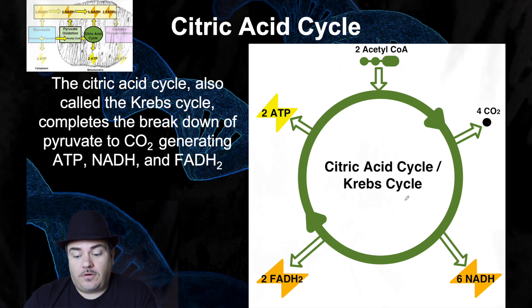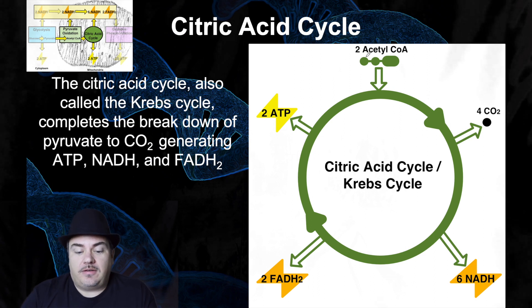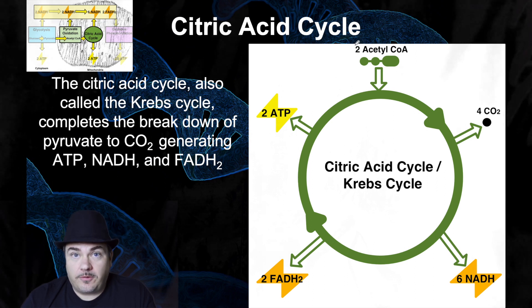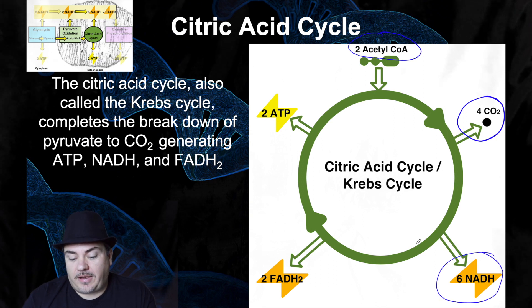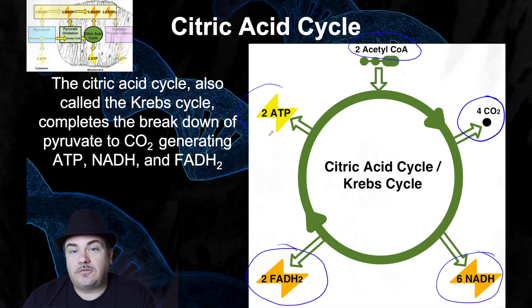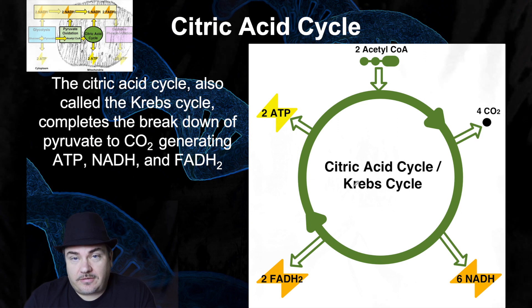The citric acid cycle is also called the Krebs cycle — two names that mean the same thing; know both. The citric acid cycle happens inside the matrix of the mitochondria, just like pyruvate oxidation. Starting from one glucose, which gave you two pyruvates, which gave you two acetyl-CoAs during pyruvate oxidation, the citric acid cycle will release four carbon dioxide as waste, make six NADH batteries, two FADH2 batteries, and two ATP batteries. The citric acid cycle is not one chemical reaction — it's actually eight chemical reactions.